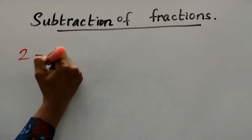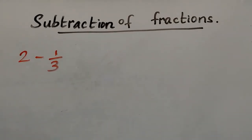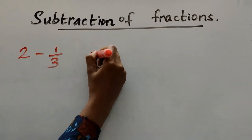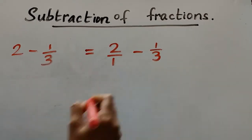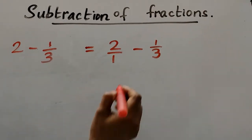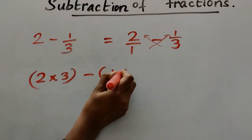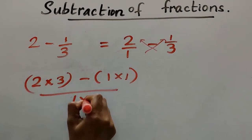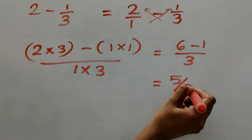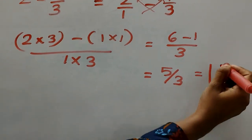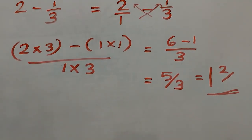Now, what if a whole number is subtracted by a fraction? For example, 2 minus 1 by 3. We write the whole number 2 as a fraction: 2 by 1. Then using cross multiplication: 2 into 3 minus 1 into 1, over 1 into 3, giving us 6 minus 1 by 3, which is 5 by 3. Converting to a mixed number, the answer is 1 and 2 by 3.